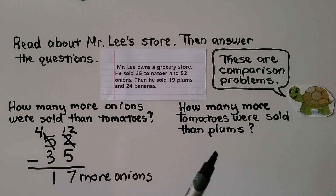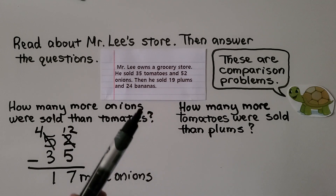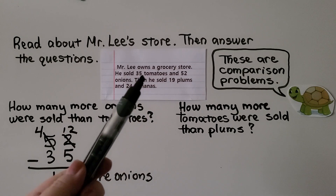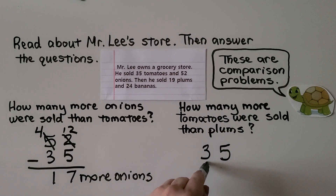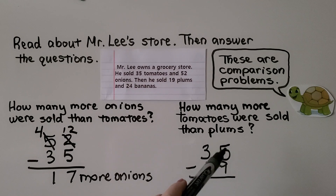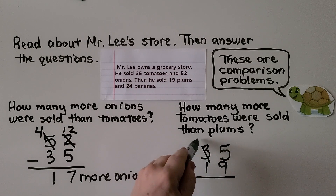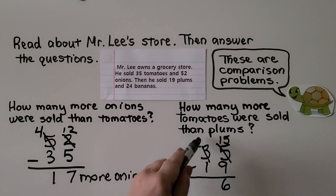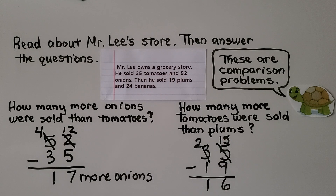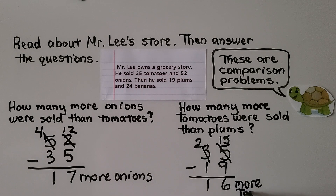The next question asks how many more tomatoes were sold than plums. We're comparing 35 tomatoes to 19 plums, and we subtract to find the difference. We have 5 ones and need to take 9 away — we don't have enough, so we regroup. 3 tens becomes 2 tens and 5 ones becomes 15 ones. 15 minus 9 is 6. Two tens minus one ten is one ten. He sold 16 more tomatoes than plums.